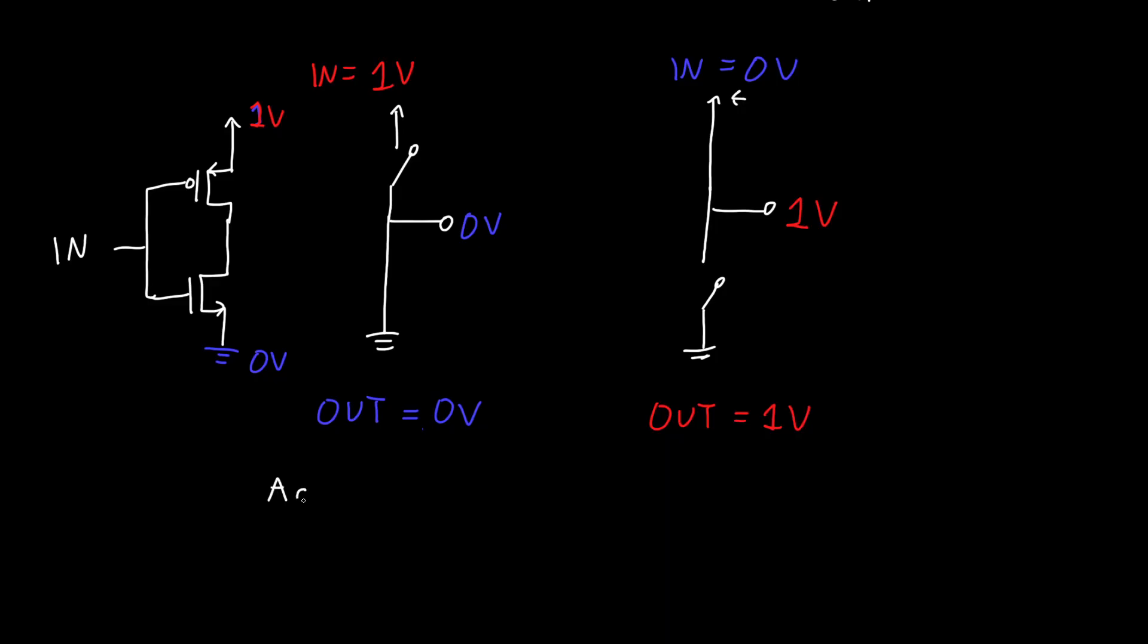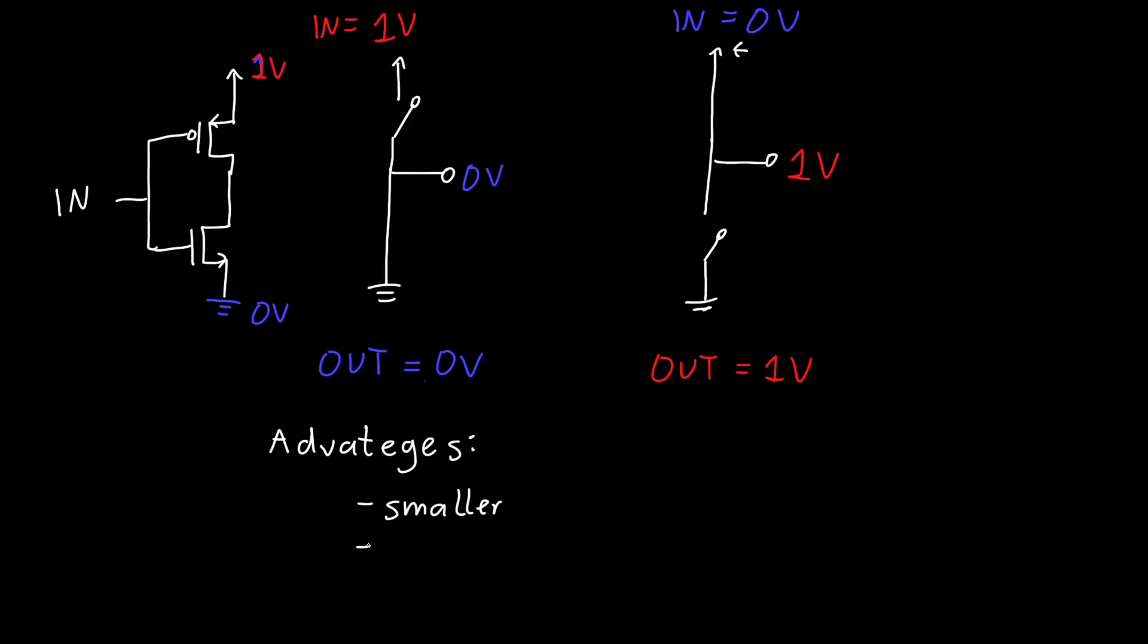And this has a lot of advantages compared to using a resistor. This is a lot smaller, so transistors nowadays can be made absolutely tiny, nanometers. It takes no power. So if our input is 0, then we are disconnected, our VDD is not connected to ground, so we have no current.